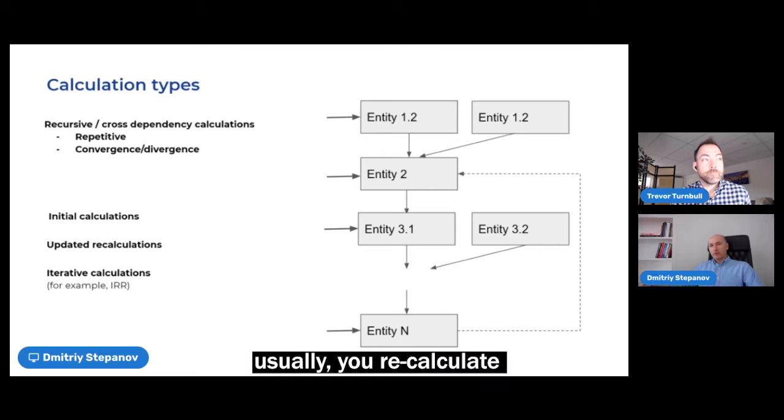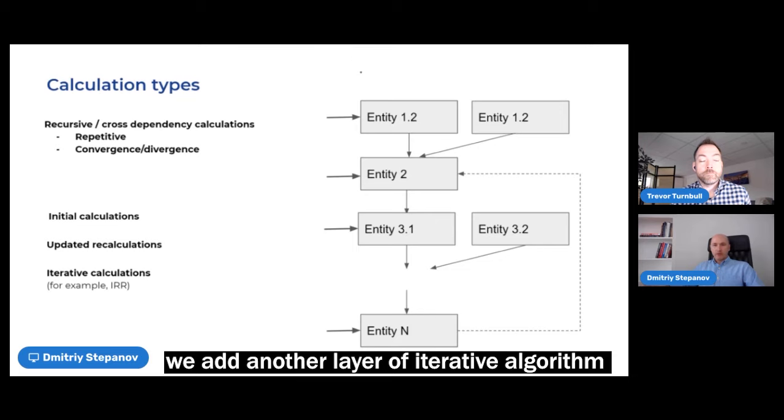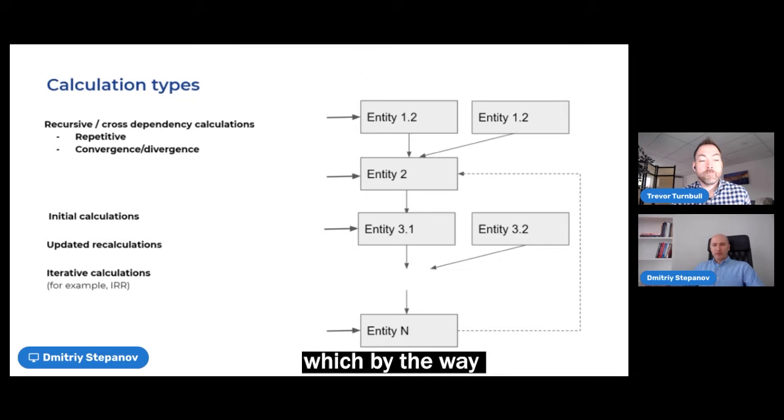Usually you recalculate everything from the scratch and there is another type of calculation iterative, for example the internal rate of return. When on top of cross dependent calculation we add another layer of iterative algorithm which by the way might produce divergent results, complicating things even further.